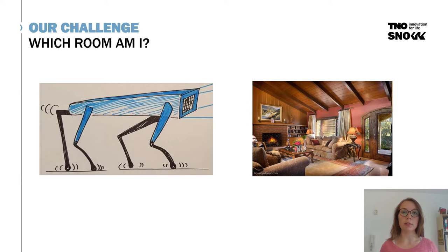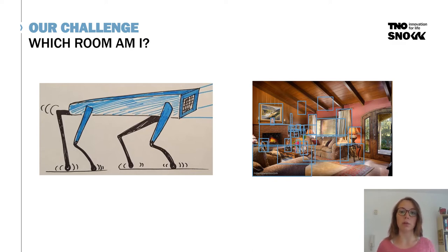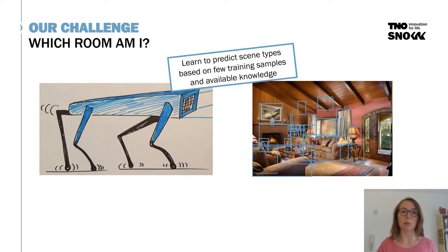For detecting the scene type, we make use of object detections. For example, if you look at the room Spot is looking at now, you can detect object types. There are objects recognized in the image, but there are also false positives — as you can see in the ceiling. Not all detected objects are correct, and there is some noise in the data. Using these detected objects and a few training examples, we will predict which type of room it is.